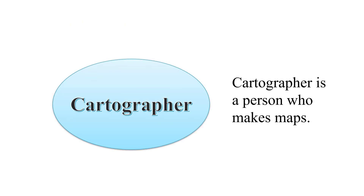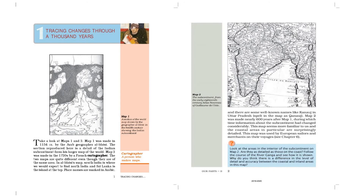There is a term given in your book: Cartographer. A cartographer is a person who makes maps. In the beginning of this chapter, there are two maps given. The first map was produced by Al-Idrisi in 1154, and the second map was made by a French cartographer in the 1720s.